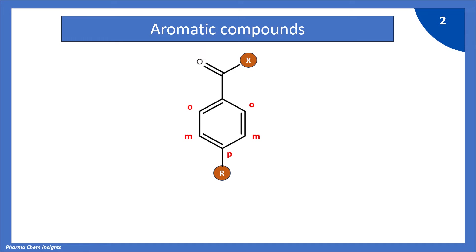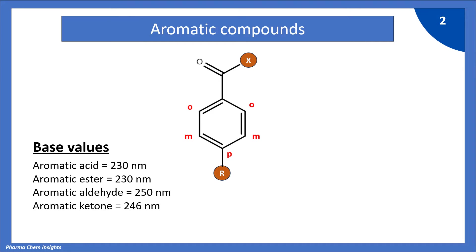Let us see the base values for different aromatic carbonyl compounds. If the carbonyl compound is an acid, the base value is 230 nm. For an ester, the value is also 230 nm. For aldehydes, the base value is 250 nm, whereas for ketones it is 246 nm.